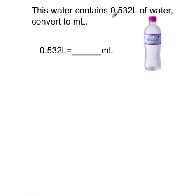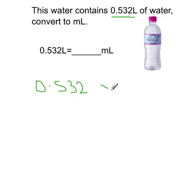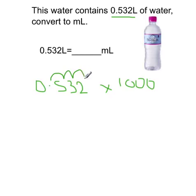Let's look at this one. We've got 0.532 litres of water. We want to work out millilitres, so we times by 1000. We move all the numbers forward three spaces — one, two, three — and the answer is 532 millilitres.